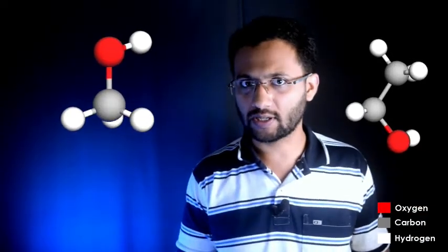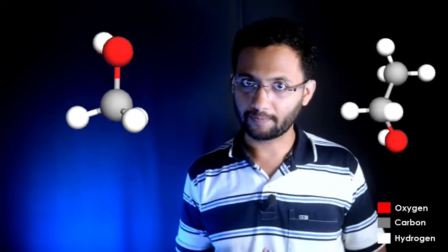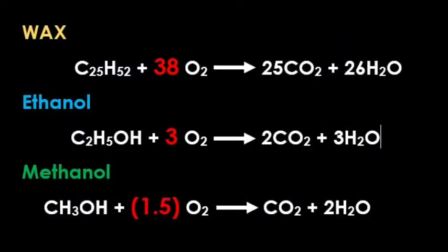On the other hand, if you look at methanol or ethanol, they do not have long chains and get enough oxygen from the atmosphere for their complete combustion. Hence the end product is colorless carbon dioxide. Comparing ethanol and methanol, methanol requires even less oxygen to burn, so it burns cleaner than ethanol and the flame is not visible at all.